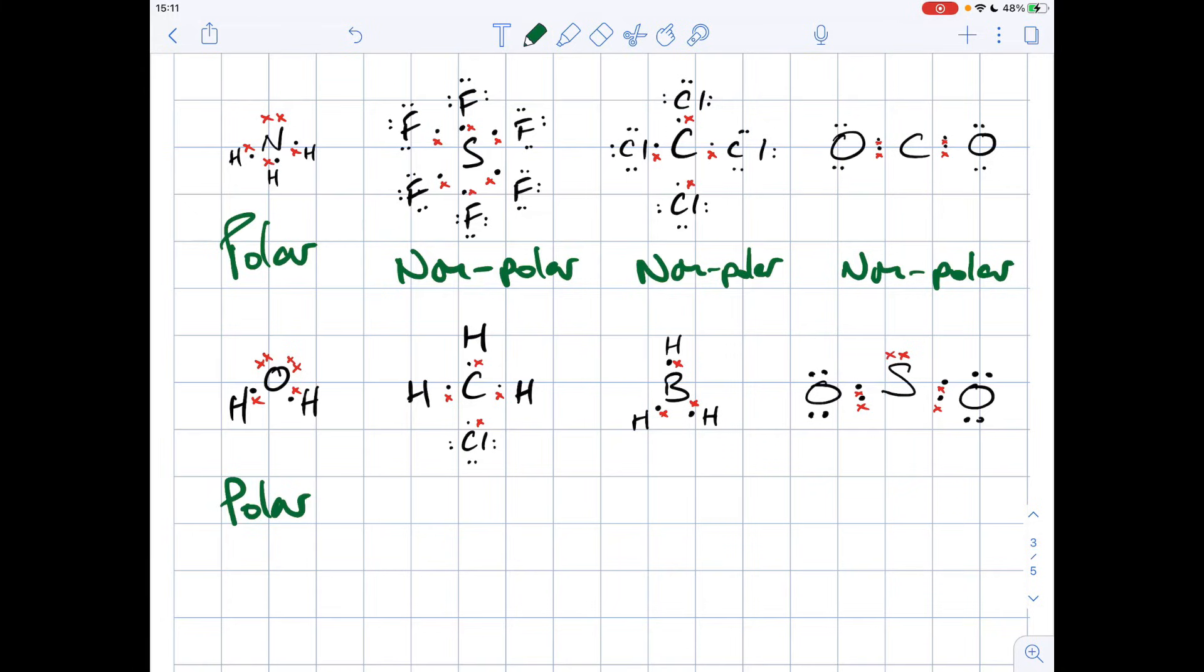CH3Cl, so that's chloromethane. We've got a different terminal atom, we've got one chlorine and three hydrogens. Doesn't matter if there's lone pairs or not because the answer's already polar.